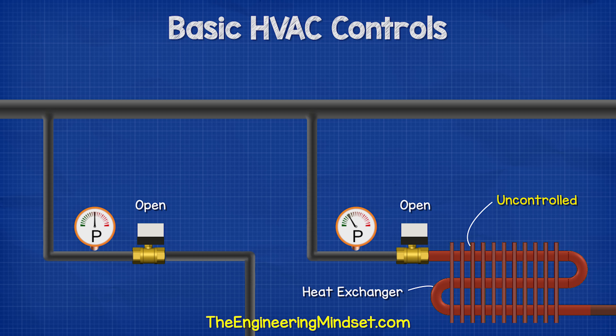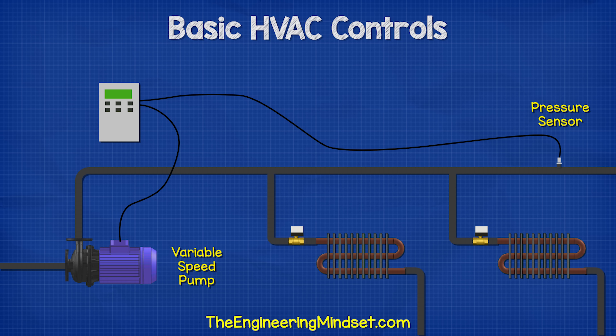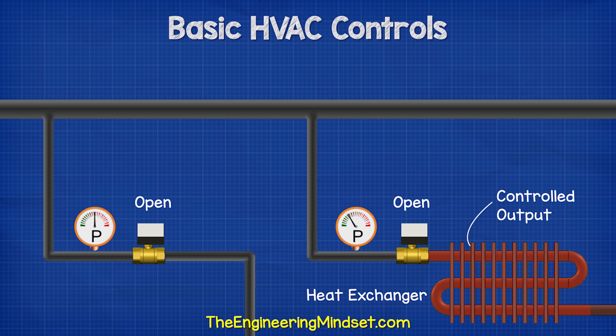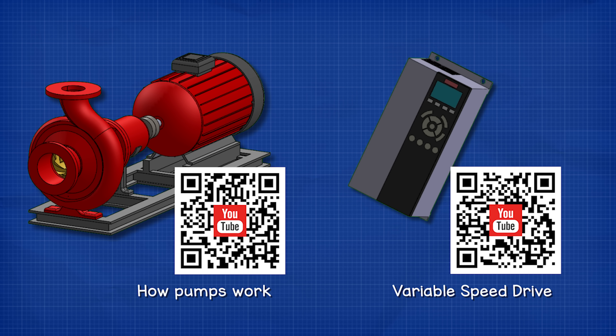To overcome this, we could install a pressure sensor and a variable-speed pump. As the valves open and close, the pump changes speed to try and maintain a constant pressure and thus a constant flow rate through the radiators, regardless of when another valve opens or closes. We have covered how variable-speed drives work and also how pumps work in our previous videos — I'll leave a link in the video description below.